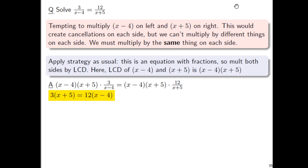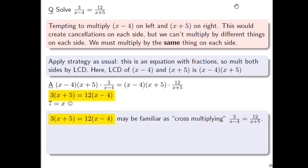On the right side of the equation, the x plus 5 factor on top and bottom cancel. So we're left with 12 times quantity x minus 4. Take a look at what's in yellow: 3 times x plus 5 equals 12 times x minus 4. I'll skip some work here, but in the end, you should get 7 equals x.